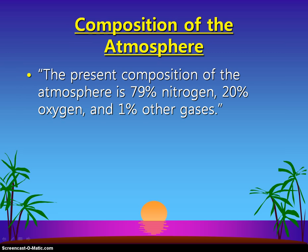Our atmosphere — each layer is going to be made up of the same types of chemicals. Depending on which layer you're talking about, it could be more concentrated due to the Earth's gravitational pull. The major chemicals are nitrogen and oxygen, and then a few smaller ones — less than one percent — made up of things like argon and helium. But nitrogen and oxygen are going to be the big components as far as the makeup of the Earth's atmosphere.